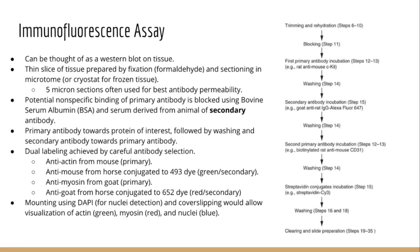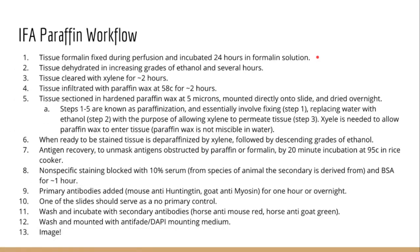Basically, you have two primaries from different species and two secondaries from the same species, but they recognize different species. Designing a dual labeling experiment in IFA takes a pen and paper to make sure you're ordering the correct antibodies. Once you have your antibodies bound and labeling your antigens, the slide is mounted using DAPI, which is a fluorescent dye that labels nuclei and also preserves the slide for analysis. You then coverslip and your slide is ready for imaging in a fluorescent microscope.